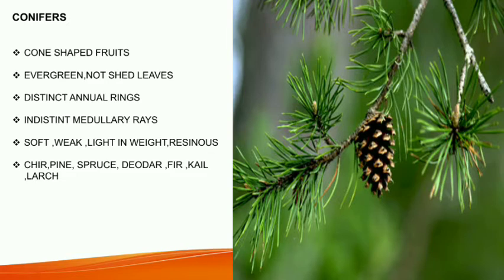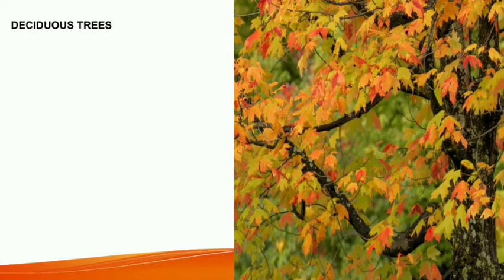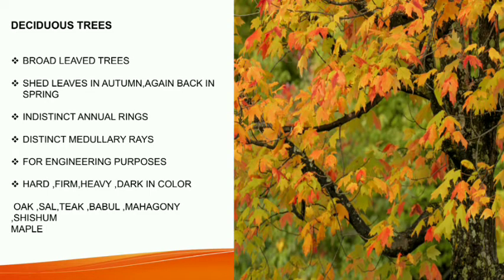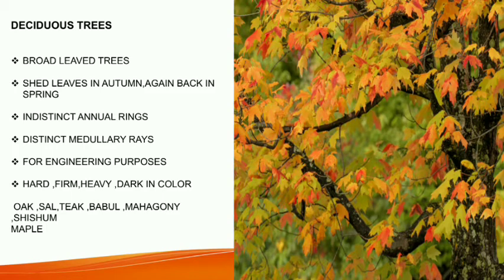The next type of exogenous trees is deciduous trees. Deciduous trees mainly have broad leaves. They shed their leaves in autumn and the leaves come back in spring. Unlike conifers, they have indistinct annual rings and distinct medullary rays. These types of exogenous trees are used for engineering purposes. They have very hard, firm, heavy, dark-colored timber. Examples are oak, sal, teak, babul, mahogany, shisham, maple, etc.